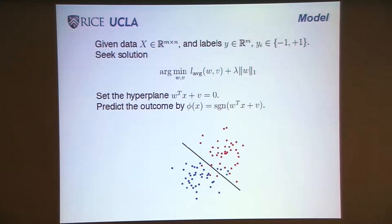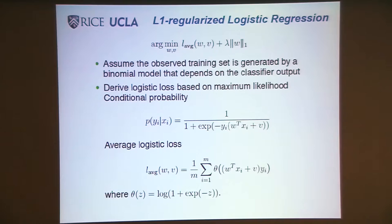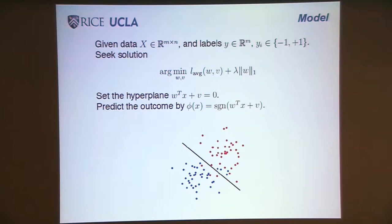This is logistic regression. If you choose L to be of a certain shape, it is the sum of this log term, the average of these log terms. The observed training set is generated by a model which depends on the classifier output. What you're doing when all is said and done is convex optimization, minimizing this functional of W and V. And you add L1 regularization.